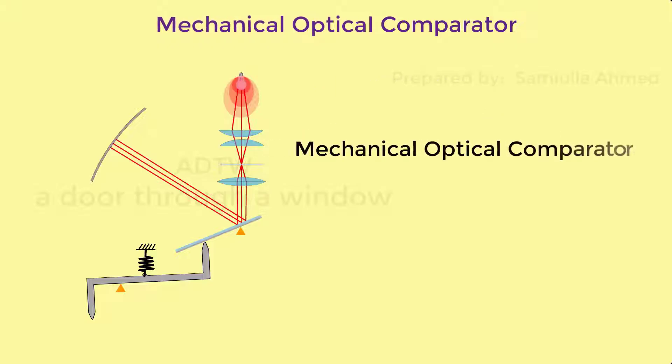Mechanical optical comparator. This is also termed as Cook's optical comparator. As the name of the comparator itself suggests, this has a mechanical part and an optical part.